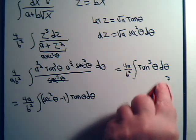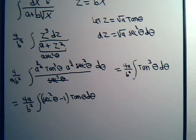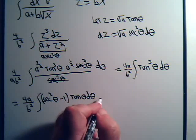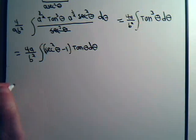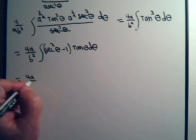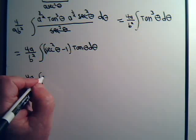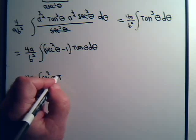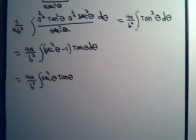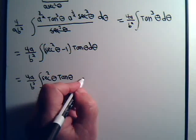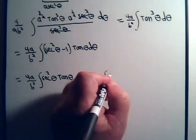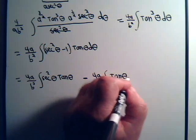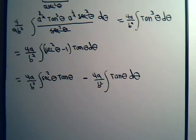Let's make some room and multiply out. This gives us: 4a over b squared times the integral of secant squared theta times tangent of theta, minus 4a over b squared times the integral of tangent of theta d-theta.